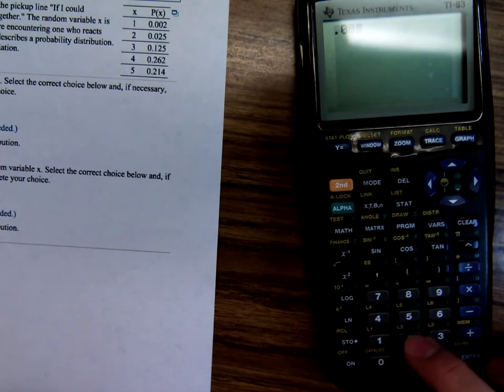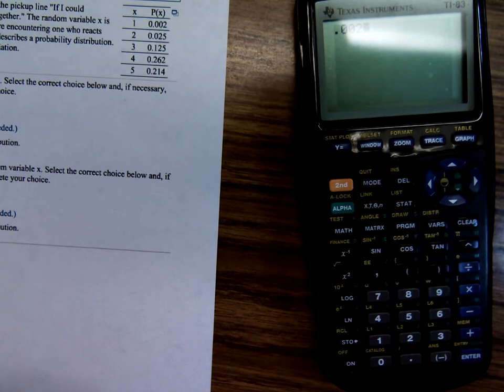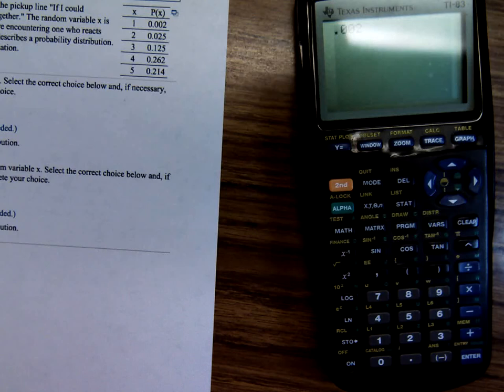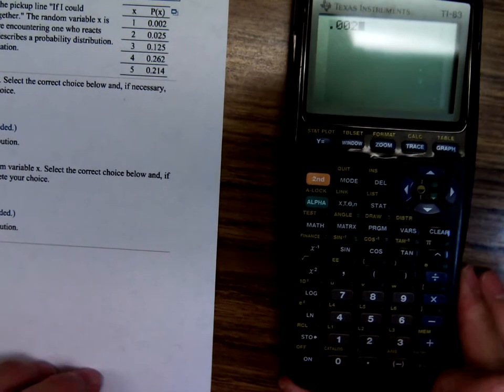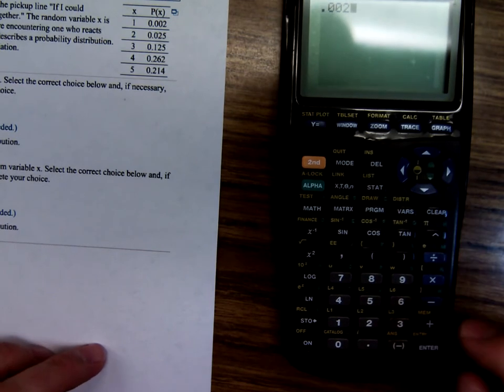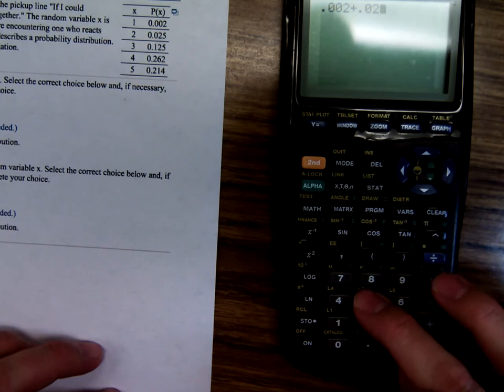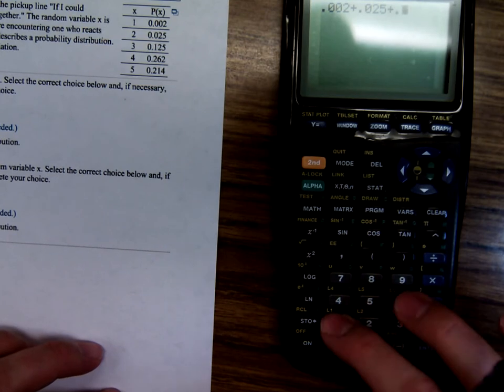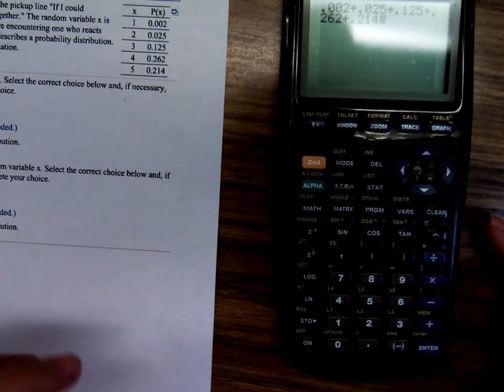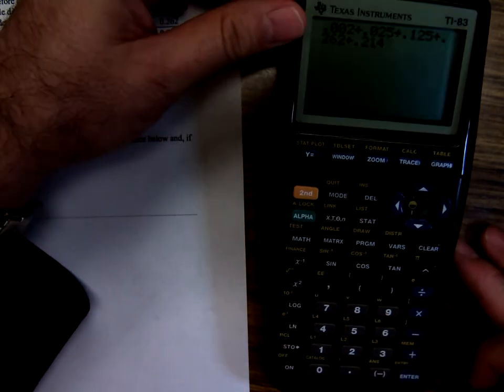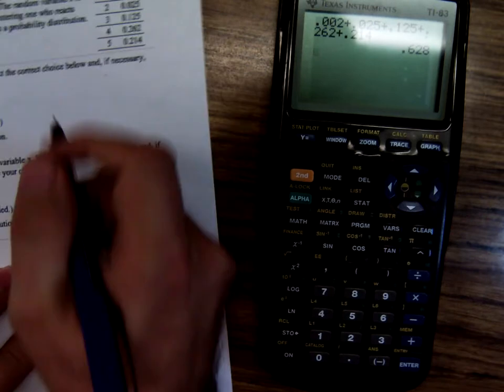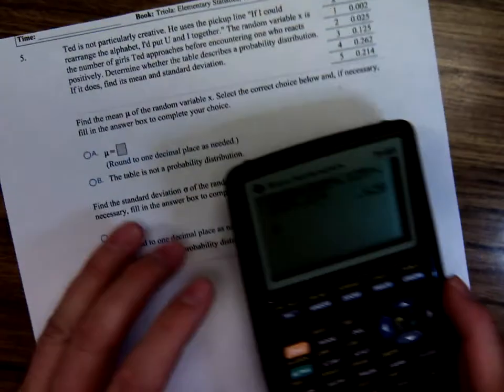So, point zero zero two plus, just add these numbers. Plus point zero two five, plus point one two five, plus point two six two, plus point two one four. I'm just adding up these numbers. And look, it only equals point six two eight.